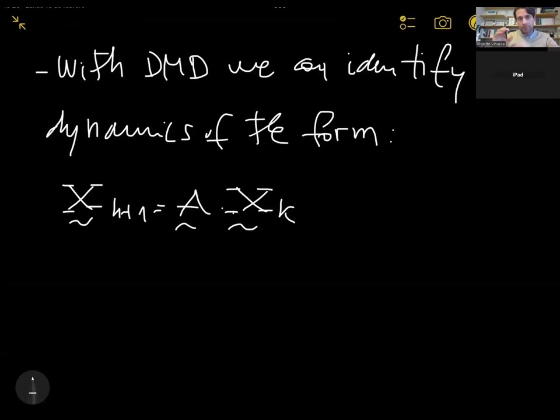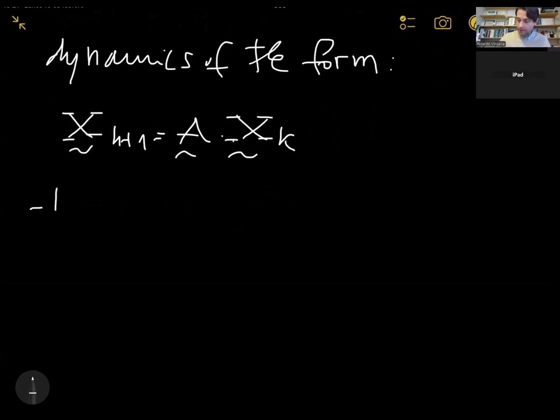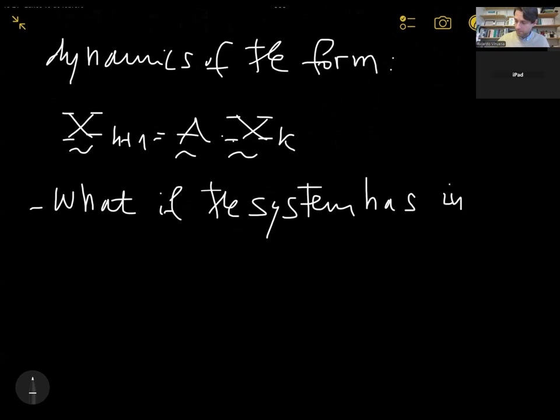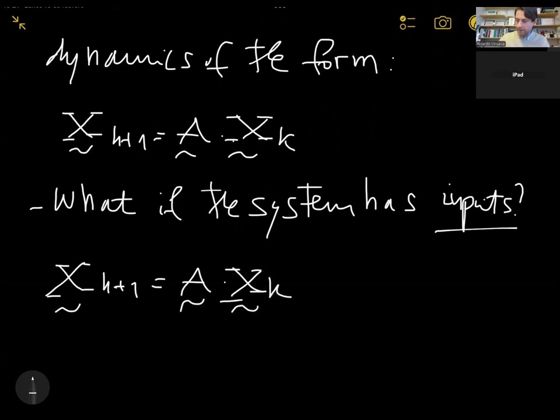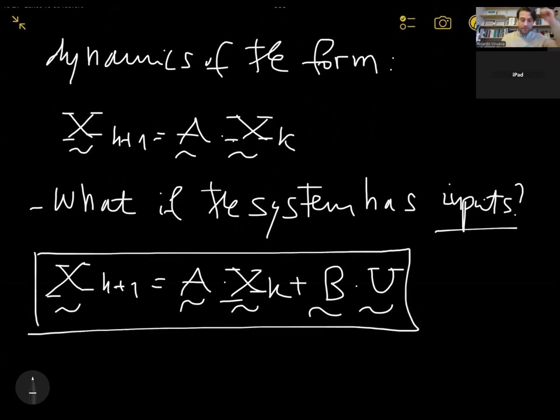So what if the system has inputs, what if there are knobs that we can turn in the system in such a way that we can actuate, that we can manipulate its underlying dynamics? Basically, the dynamics will become X_{k+1} equals A times X_k plus some other linear operator B times U, where capital U will be the inputs that we're considering in our system. So now the dynamics is going to be A times X_k plus B times U.